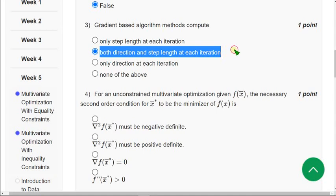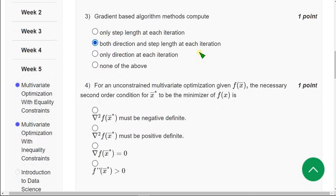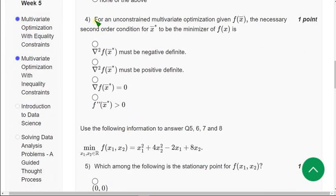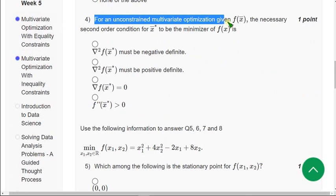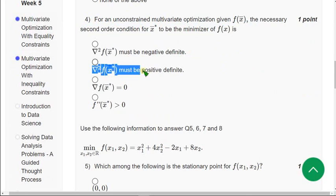And moving on to the fourth question. For an unconstrained multivariate optimization, given f(x̄), the necessary second order condition for x̄* to be the minimizer of f(x). The most probable solution for fourth question is second option. It must be positive definite.